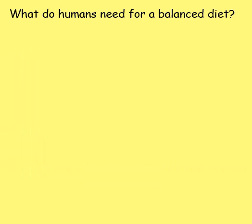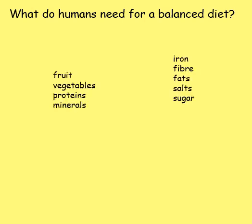Now that we've had a look at the comparison between those two plates, here's our question: what do humans need for a balanced diet? We've looked at different types of food, but what specifically do humans need? I want you to pause the video and write down your ideas. Hopefully you've come up with some suggestions — some of these we've already covered in our Eat Well Guide, but there are a few others to look at as well.